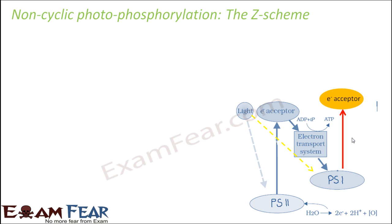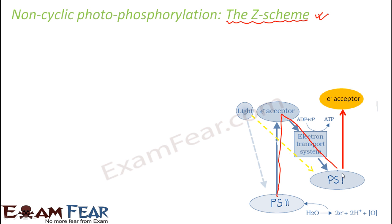This was all about the process of non-cyclic photophosphorylation. Now before we start our discussion on cyclic photophosphorylation, we will talk about an important term often used in context with non-cyclic photophosphorylation — the Z-scheme. Throughout this process, light falls on PS2, the electron gets excited and taken in by the electron acceptor, passes down the potential gradient through the electron transport chain, is taken in by PS1, gets excited again, and is accepted by another electron acceptor.